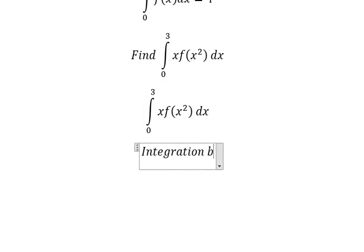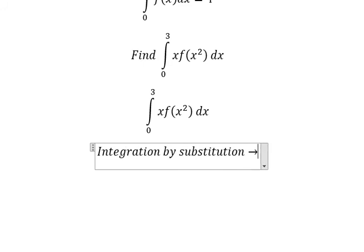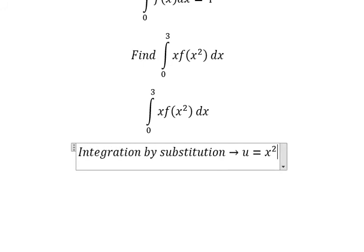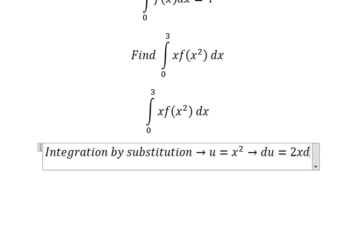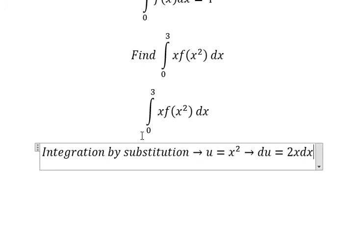We let u equal x squared, then du equals 2x dx. Because we don't have the number 2 in here, we need to divide both sides by 2.